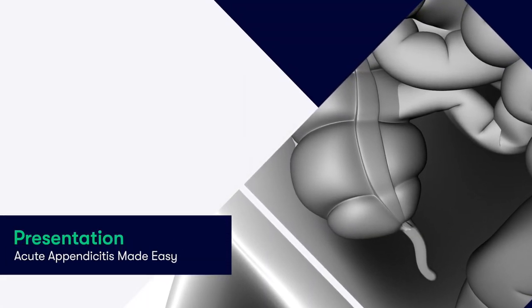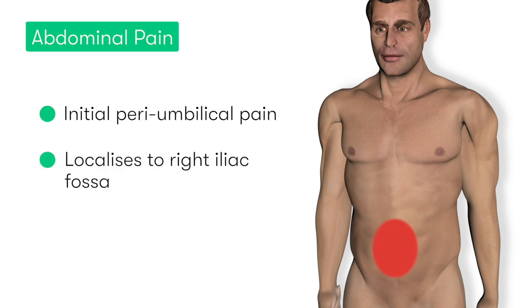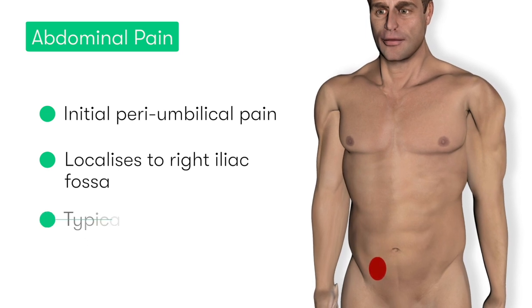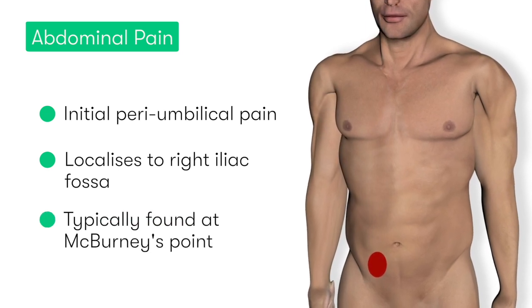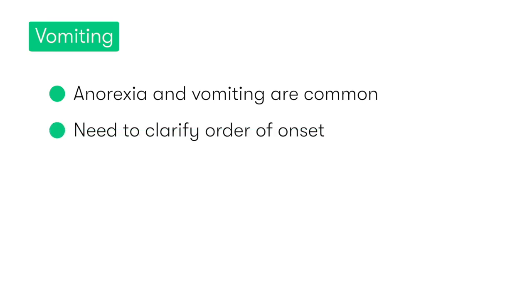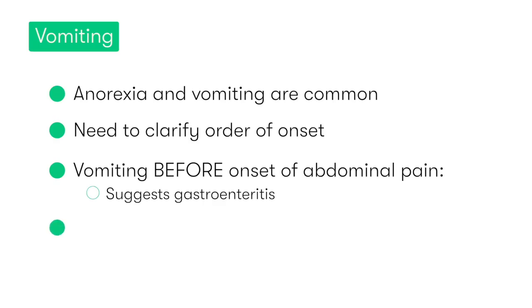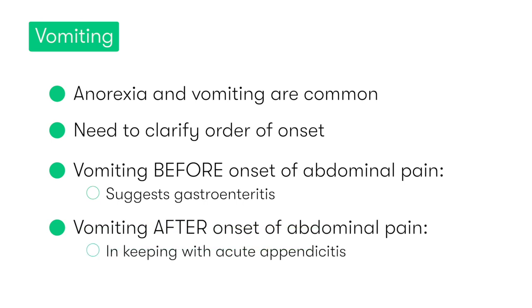The classical description of appendicitis is that the patient develops a vague periumbilical pain initially. Over the next 24 to 48 hours, this pain then becomes localised to the right iliac fossa, typically around McBurney's point. As well as pain, the patient may also complain of anorexia and vomiting. However, it's important to clarify the order of onset of these symptoms, as vomiting that occurs prior to the onset of abdominal pain is usually indicative of gastroenteritis rather than appendicitis.